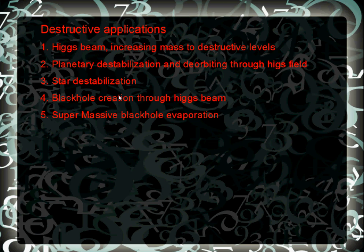Or you could do the reverse with planetary destabilization: create a Higgs shield around a planet. Since gravity is what holds planets together, making everything on the planet massless would cause the planet to just come apart — rip itself to pieces and float apart. It would also deorbit the planet, because the planet would no longer be affected by the gravitational pull of its parent star.